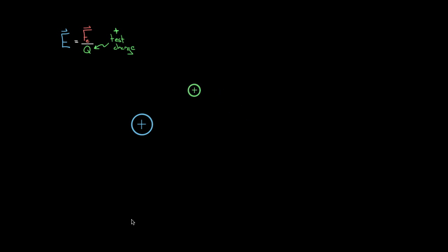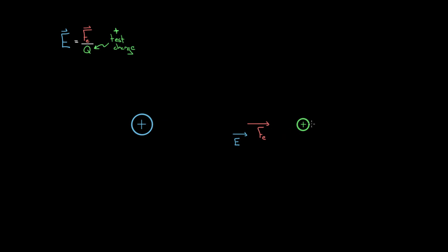Because the electric field is a vector and the electric force is a vector, the electric field just adopts the same direction as the electric force, as long as Q is positive. If Q were negative, it would flip the sign of the electric force, and E would point the opposite direction. But if we keep our test charge positive, the electric field points the same direction as the electrical force on that positive test charge.